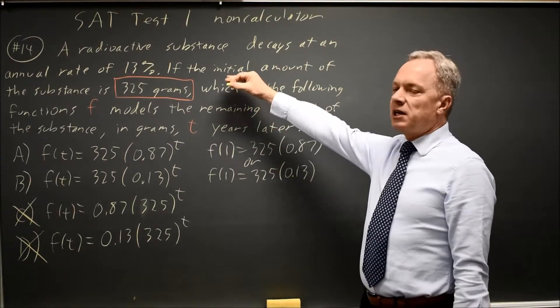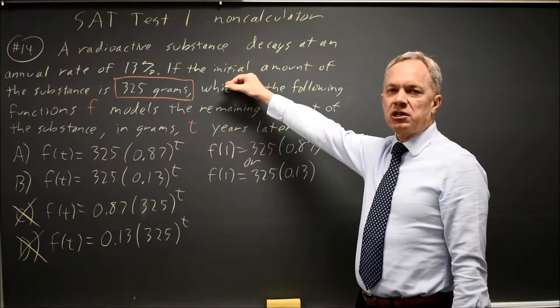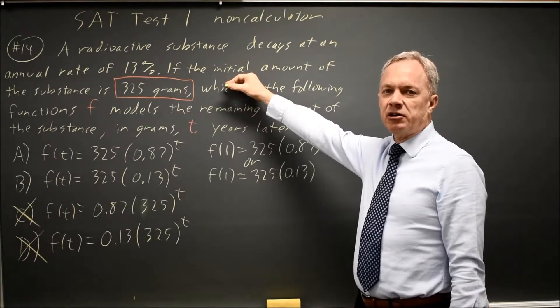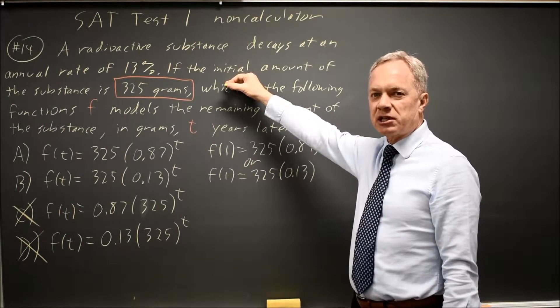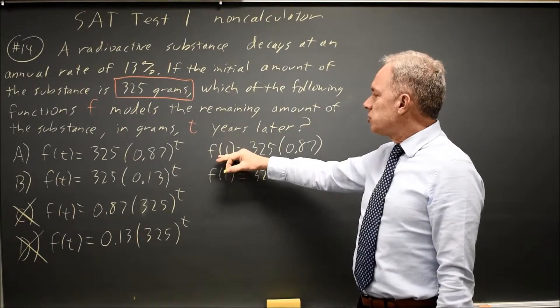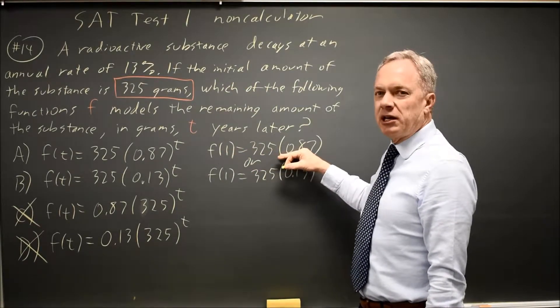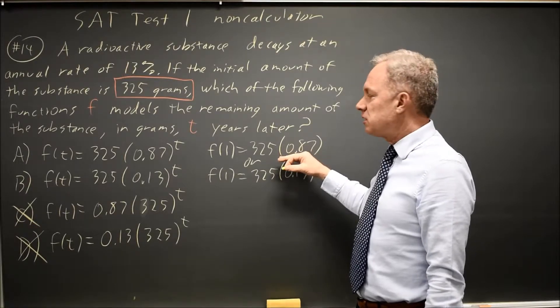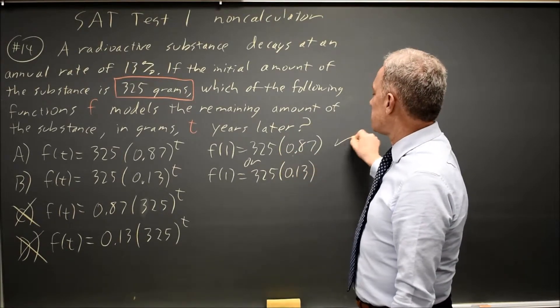If you decay at a rate of 13%, you're losing 13% each year, and in particular, you lose 13% after the first year. In choice A, we keep 87%, which means we lost 13%, so that is the correct answer.